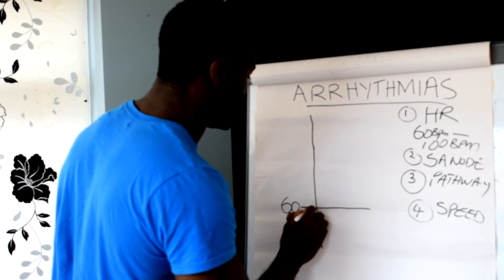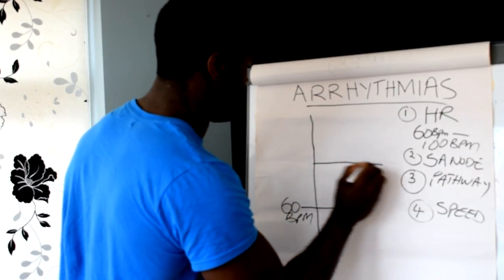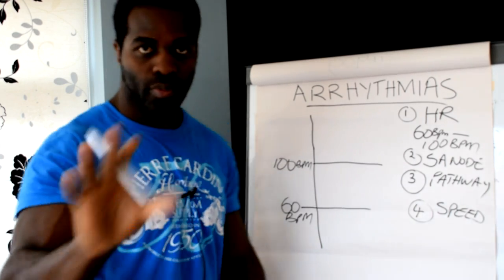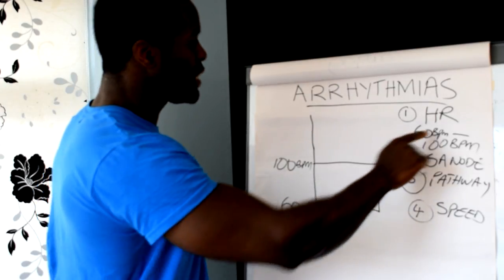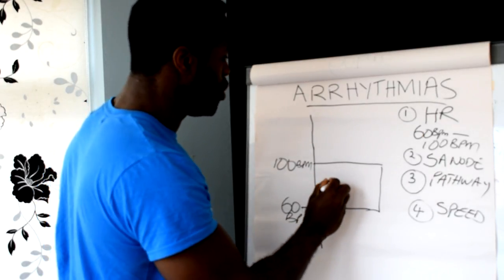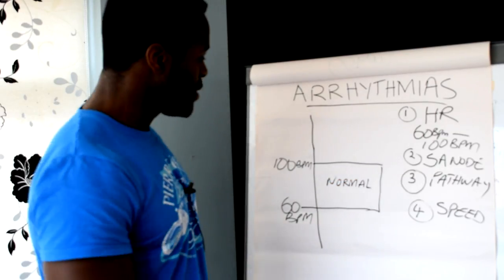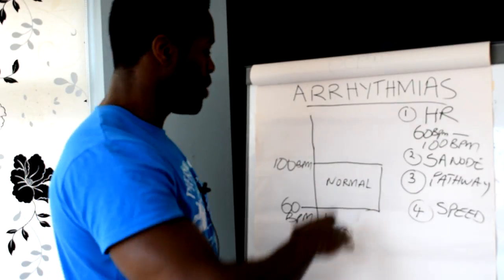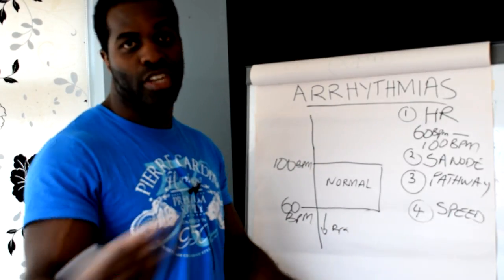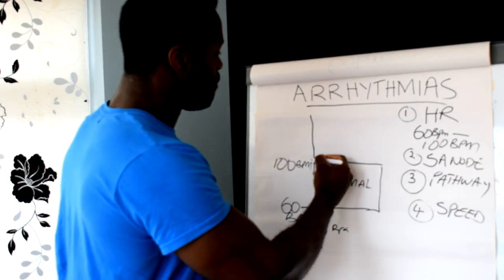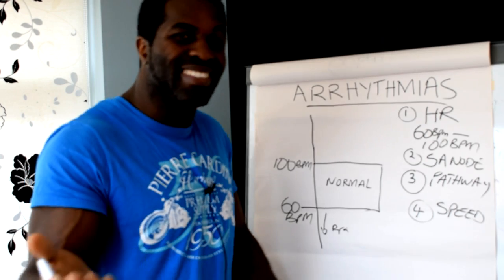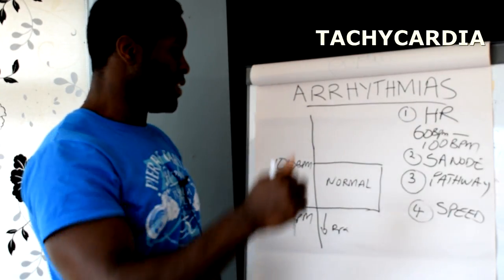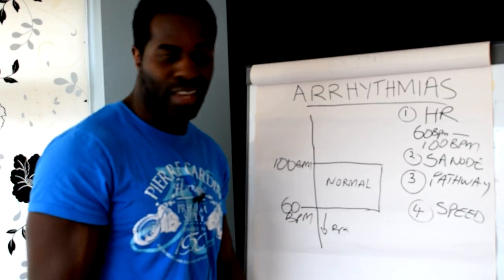So if I put 60 beats per minute on one side and 100 beats per minute on the other, anything between 60 and 100 is what we call a normal heart rate. Anything below 60 is bradycardia — that's already going into arrhythmia territory. And anything above 100 is tachycardia.